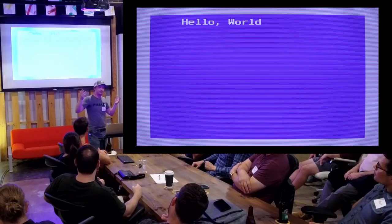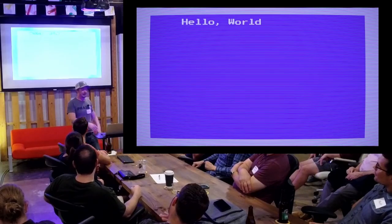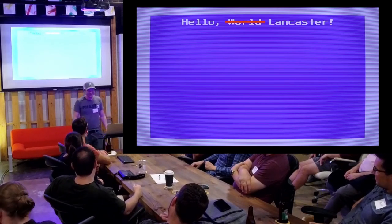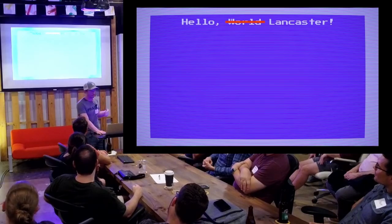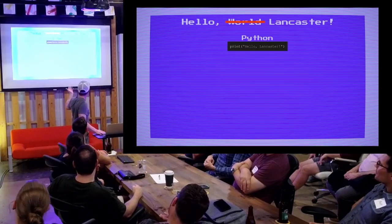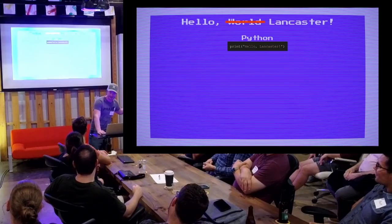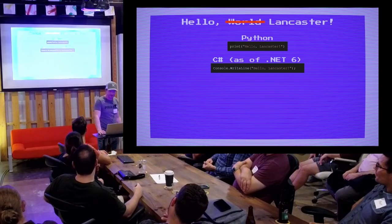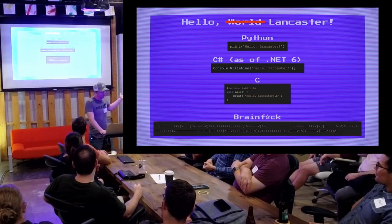Most first programs in any given language are a simple Hello World. I thought that was boring, so we're going to mix it up — Hello Lancaster. I figured I'd show a few simple examples we've all seen before. Python: a simple one-liner, super clean. C#, as of .NET 6, can also be done in one line. C: four lines of code, still easy to understand. Then we have Brainfuck — you guys get this, right? And this is Commodore 64 assembly. I'm going to break this down a bit, just to do the comparison and show that yeah, it's not as simple as just a print.